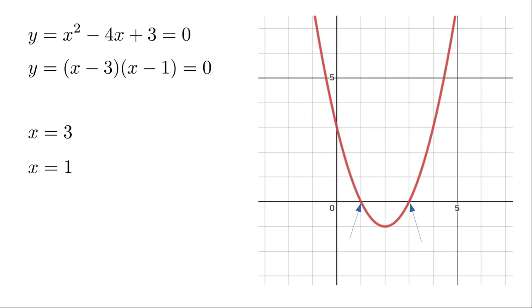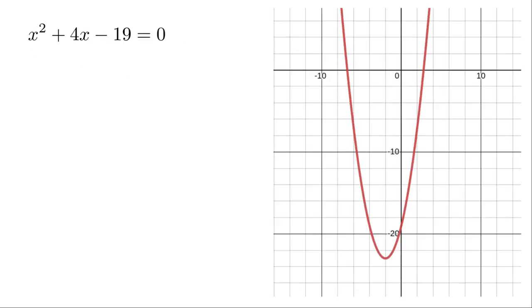But what about Sandra's torpedo? Its start and finish locations are the roots of the trajectory function shown here. There are no two whole numbers that add up to four, but equal minus 19 when multiplied. The previous method of factoring won't work.